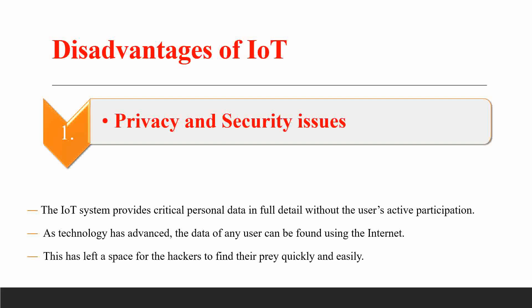Privacy and security is the main issue in the case of IoT. The IoT system provides critical personal data in full detail without the user's participation. Since we are interacting on the internet, all information is available on the network. This has left space for hackers to engage in malicious activity through online-based services.